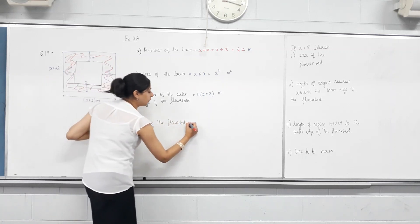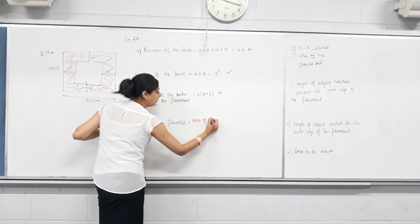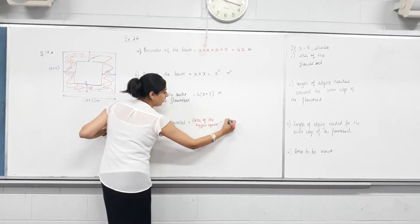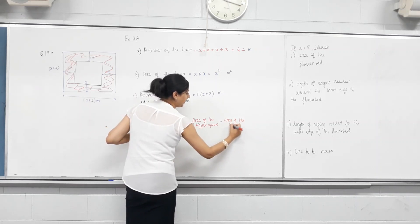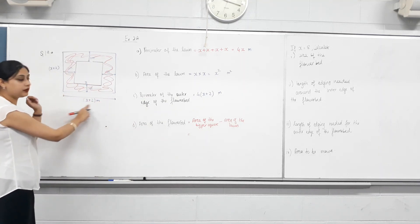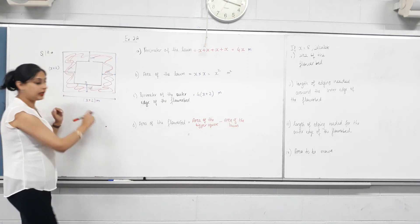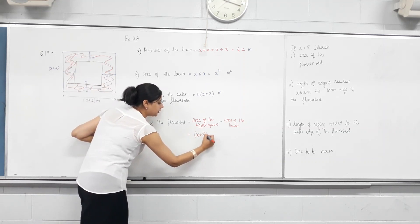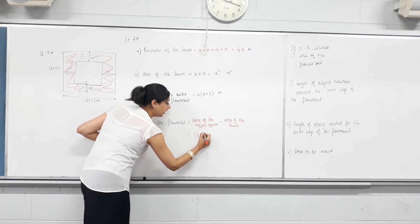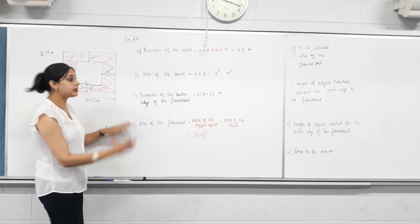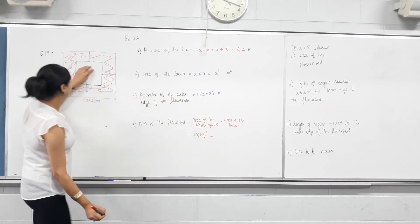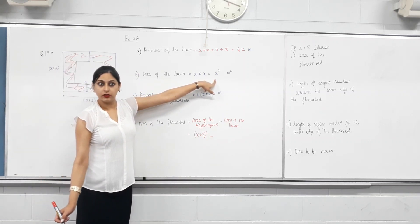So area of the flower bed equals area of the bigger square minus area of the lawn. What's the length of the bigger square? X plus 2. So X plus 2 times X plus 2. There's a smarter way to write it — can I write X plus 2 squared? Yes. So that is area of the bigger square minus area of the lawn. What's the area of the lawn? X squared.